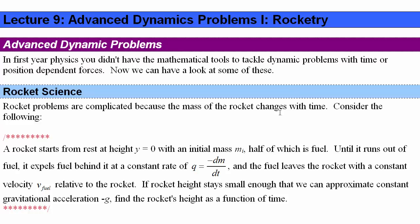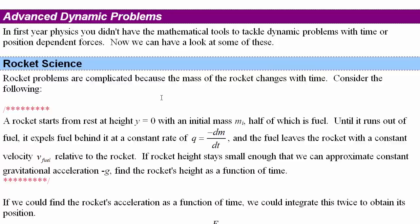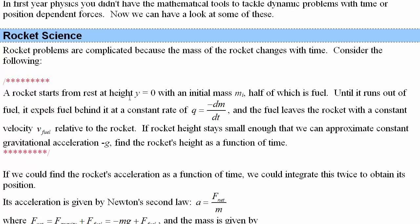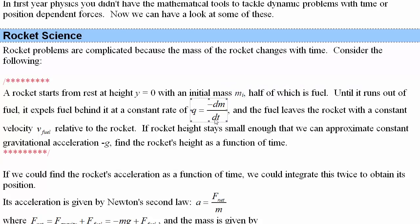What makes rocketry problems advanced is the fact that the mass is changing with respect to time. A rocket starts from height 0 with an initial mass m_i, but half of that is fuel, and it's expelling fuel at a rate q. q is a fuel flow rate, representing the change in mass with respect to time. q is negative the rate of change of the rocket's mass with respect to time. The fuel leaves with a constant velocity, and if the height stays small enough, we approximate constant gravitational acceleration. Our task is to find the rocket's height as a function of time.